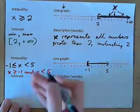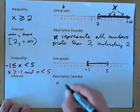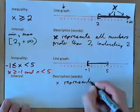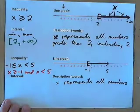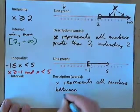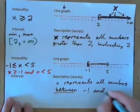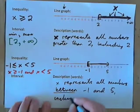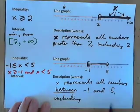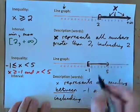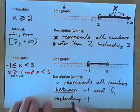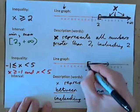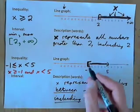And we could do the description or the interval next. Let's do the description. x represents all numbers between negative 1 and 5. And then: including negative 1. Does it include 5? No. But it does include negative 1. So, all numbers between negative 1 and 5, including negative 1. Between does not mean negative 1 and 5 themselves — it means everything in between. We use the word 'including' to include one of the boundary points.